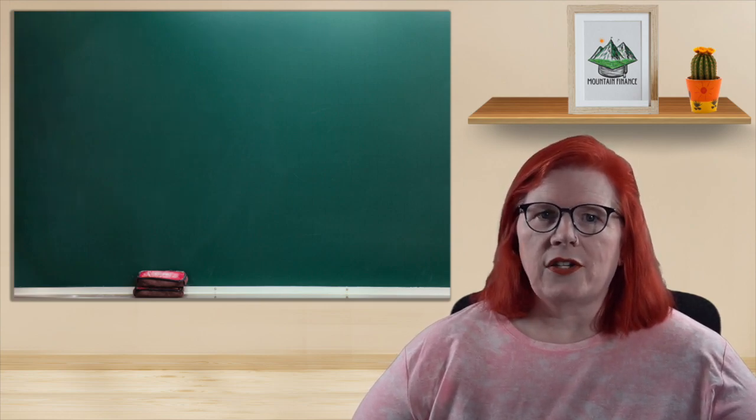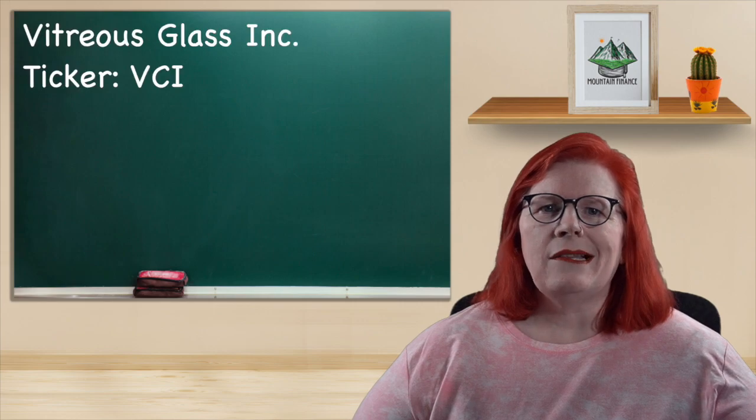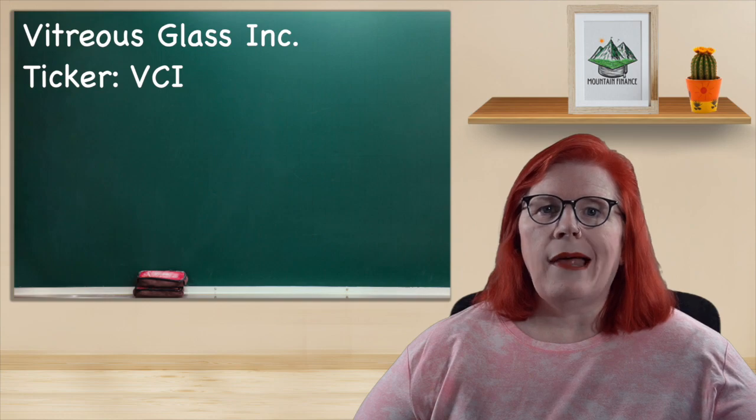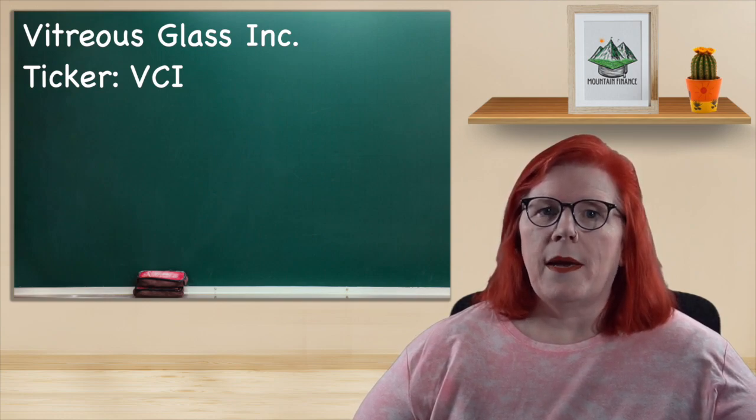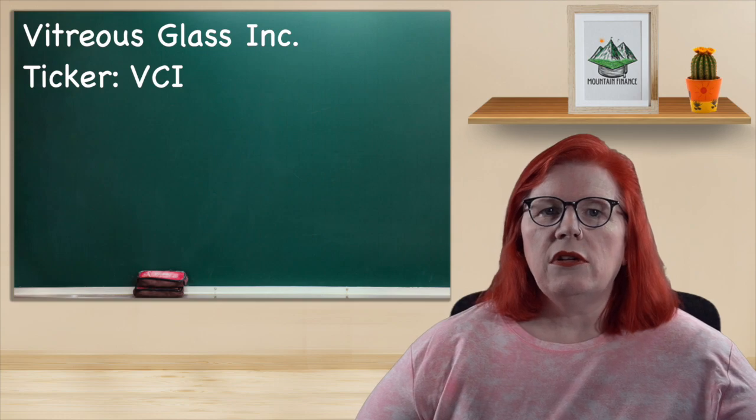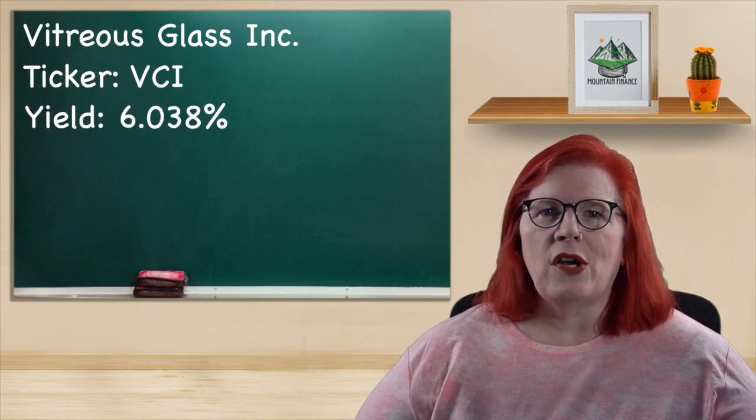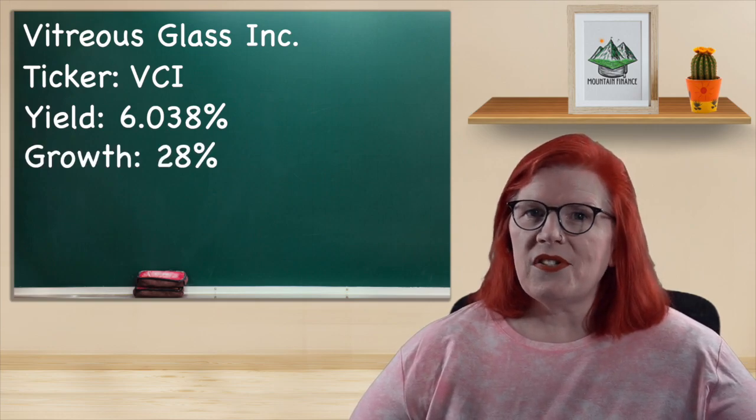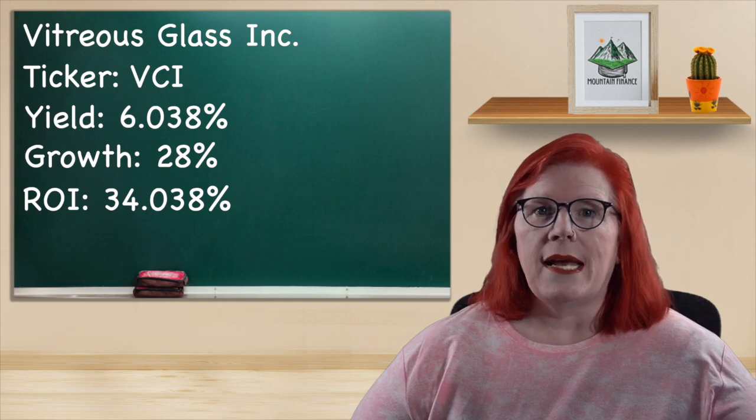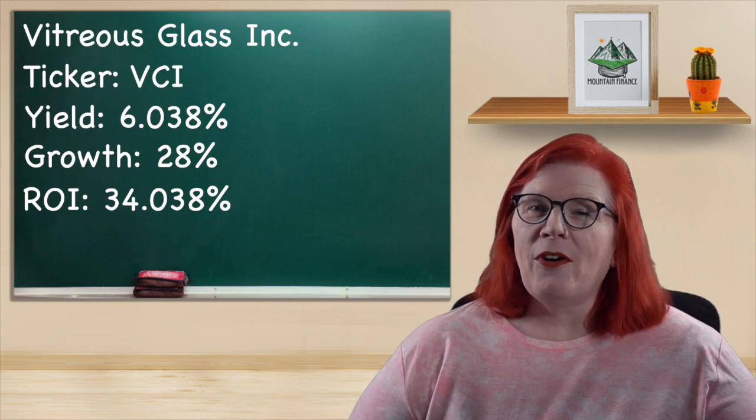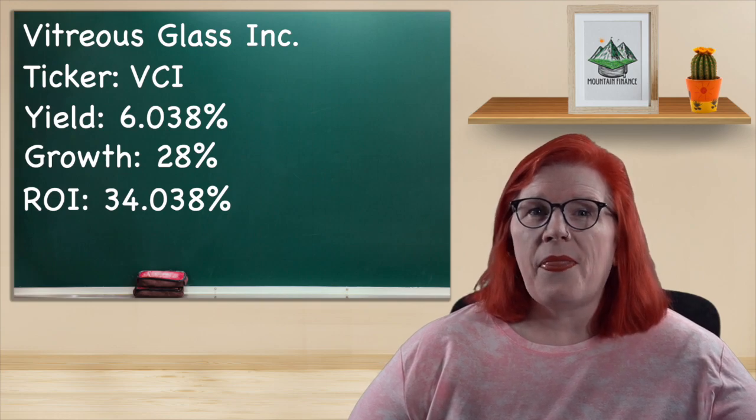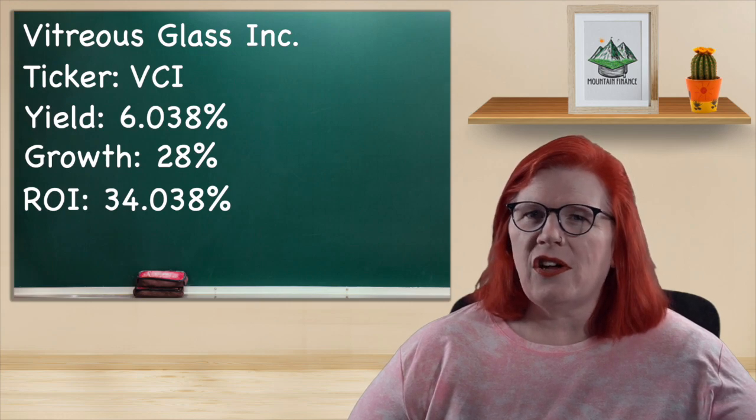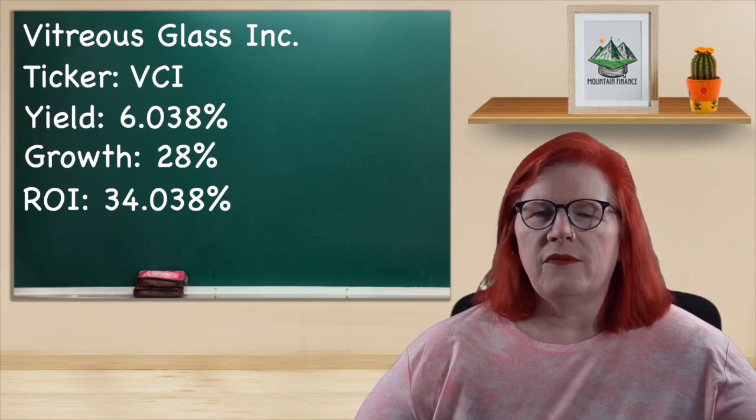Still in the industrial sector, we have Virtuous Glass Inc. with a ticker of VCI. They specialize in recycling glass and selling their end product to fiberglass manufacturers. Their dividend yield is 6.038 percent in the form of a quarterly dividend of 8 cents per share. Their growth for last year was 28 percent for a total ROI of 34 percent. Pretty good overall numbers. One thing I really like about this company is that they have been consistent with their growth over the last 10 years moving from penny stock status to a more respectable investment choice.